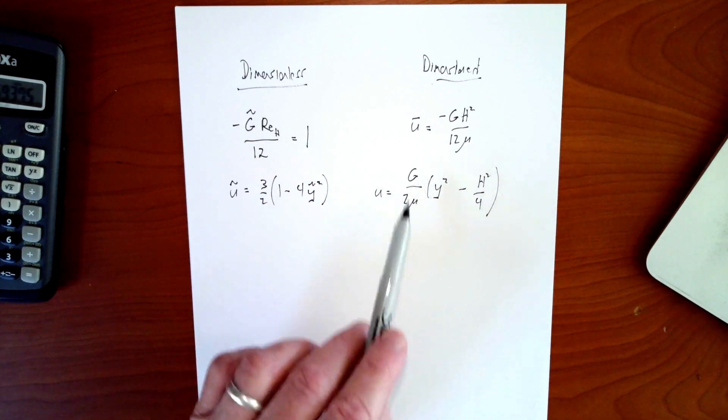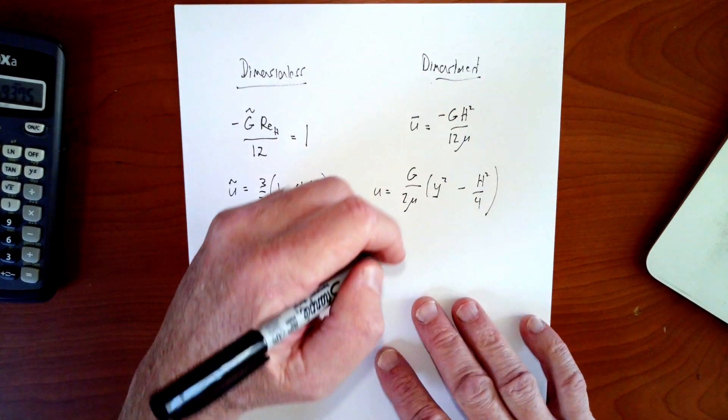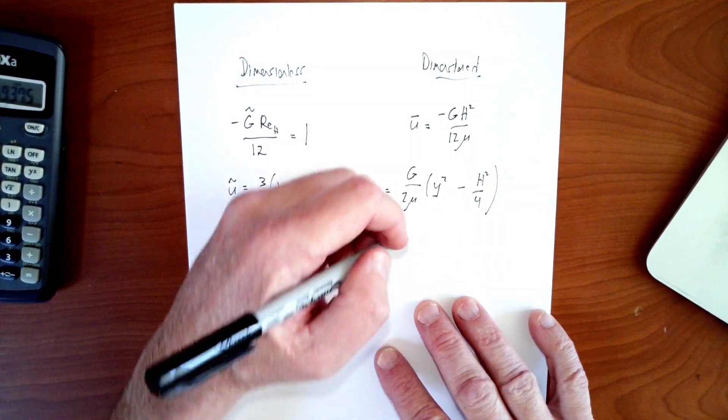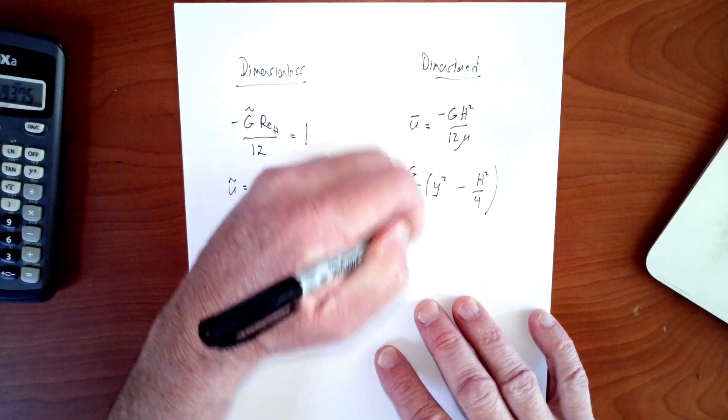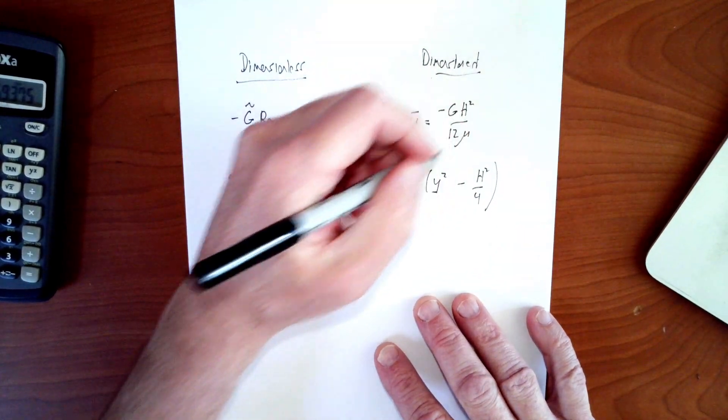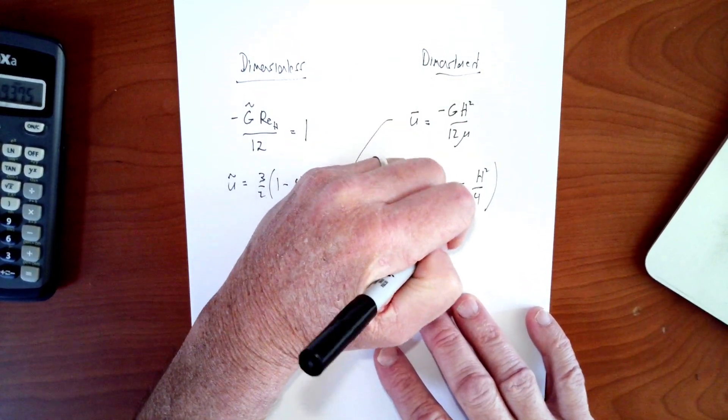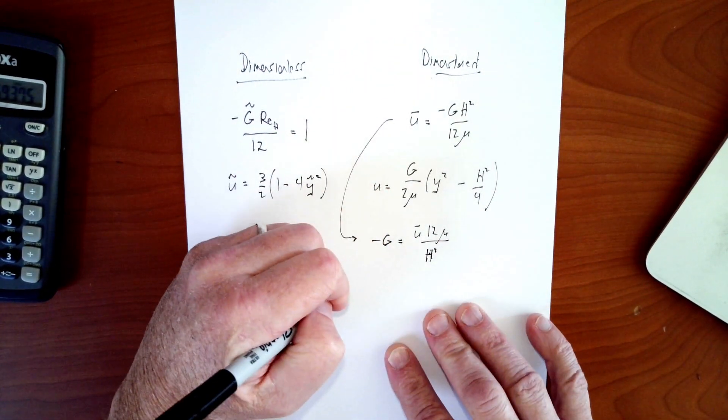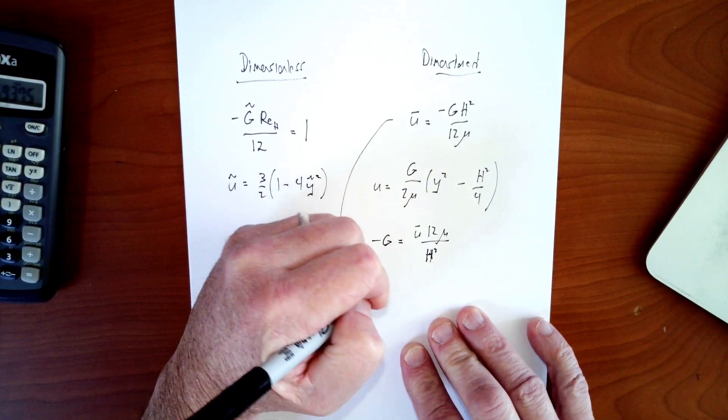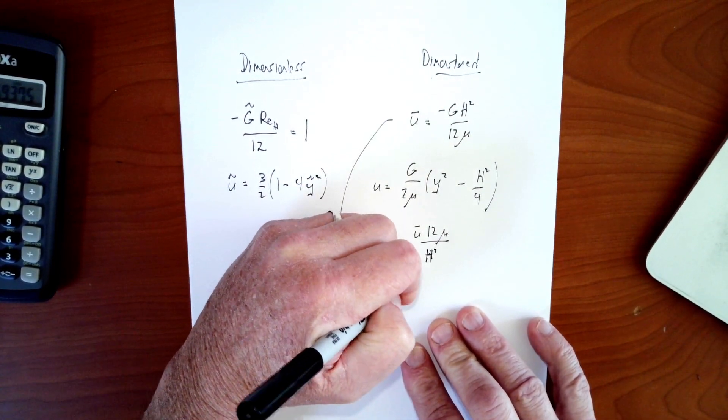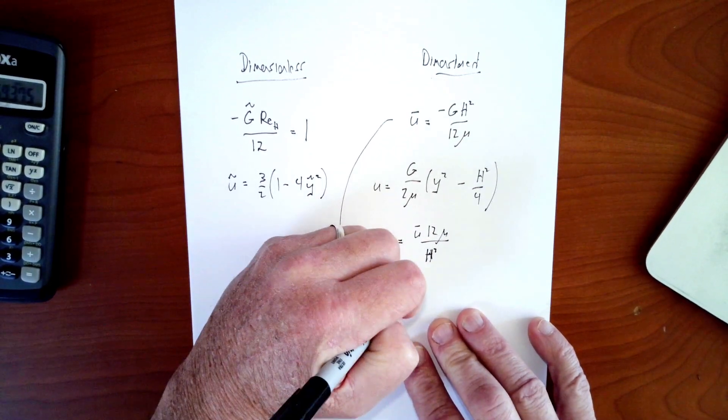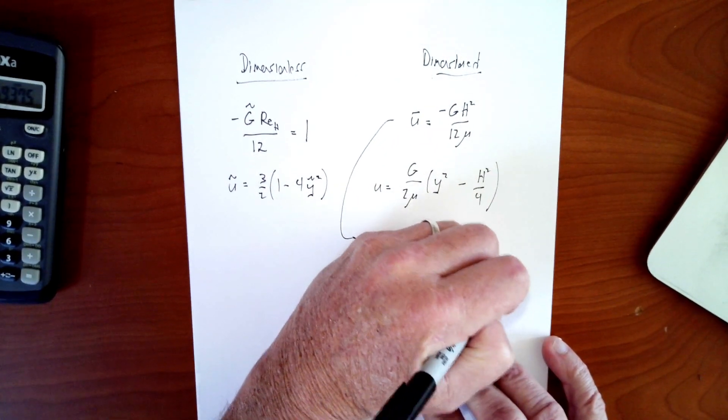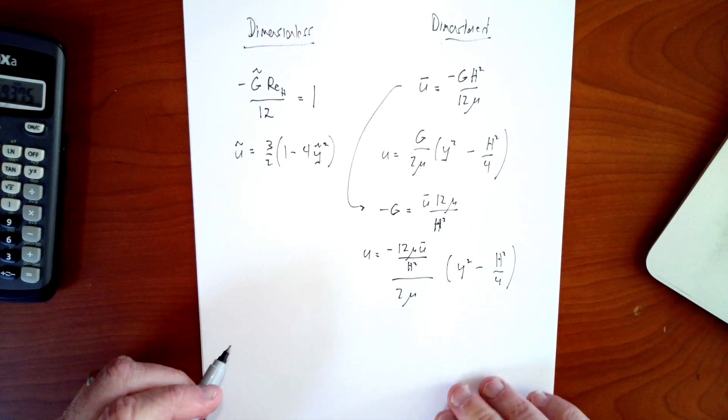So we know the average flow velocity from here. So I can use that to plug in for g. So that's what I'm going to do to make these look a little more similar. So I'm going to use this equation, come down here and solve this for g. So I get u bar 12 mu over h squared is what minus g equals, right? So then I'm going to plug that into here. So I have u is equal to minus 12 mu u bar over h squared, all divided by 2 mu times y squared minus h squared over 4.